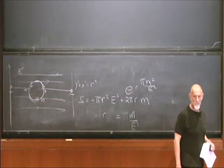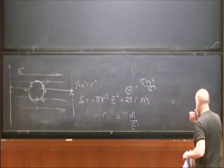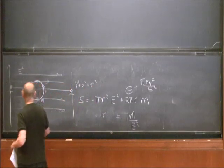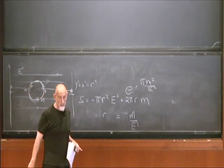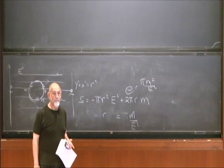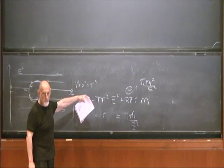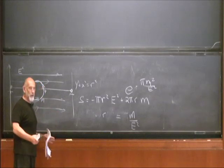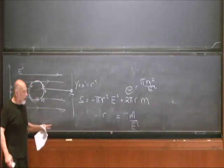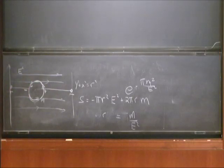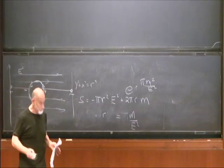There's a zero mode — of course, just the location of the instanton. There's no zero mode associated with the radius. But there's something very close to a zero mode, so in practice you really would want to integrate over the position. Integrating over the spacetime region is just a statement that you are calculating the decay probability per unit space per unit time. If you want the total decay probability, you have to integrate over location.